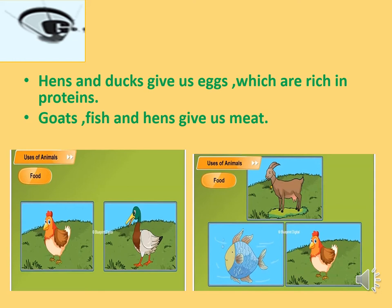Here is an important piece of information: we should not eat fish in the months of May, June, July and August, because it is the breeding period for fish.